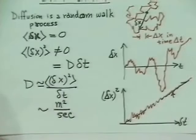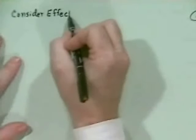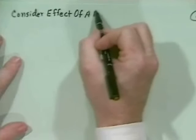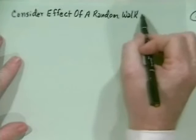Now we want to apply this random walk process to an inhomogeneous medium — in our case a plasma. Given a density profile with a density gradient, what particle flux does that cause? We will obtain Fick's diffusion law from this. Consider the effect of a random walk process — collisions are obviously a random walk — in an inhomogeneous medium with a density gradient.